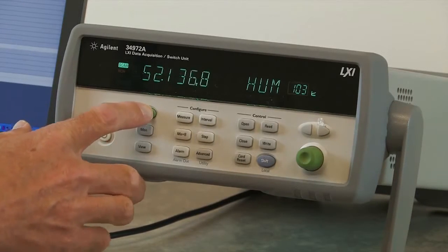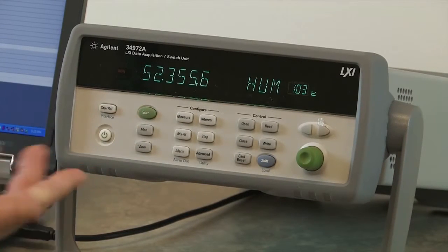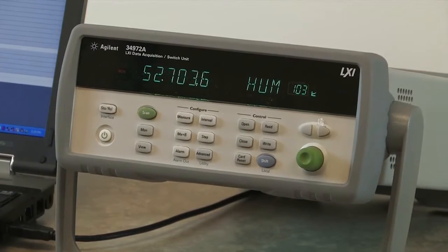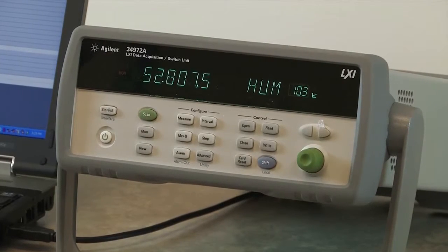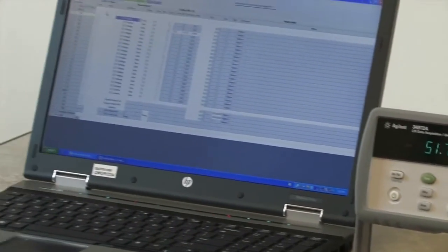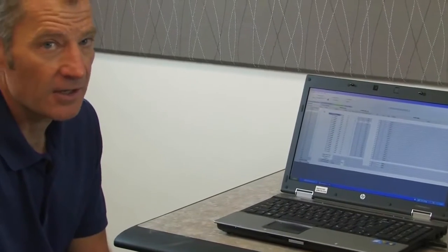Each of these readings is time-stamped and being stored in non-volatile memory inside the unit. We can stop at any time. So I'll hold this to stop the scan, and the data is being stored in the instrument. That's an example of data logging humidity from the front panel of the 34972. Let's move along and take a look at making the same measurements using the free BenchLink Data Logger software that's included with the product.